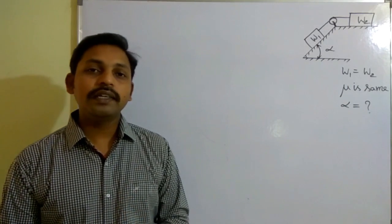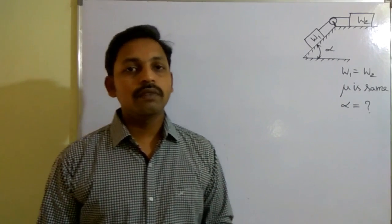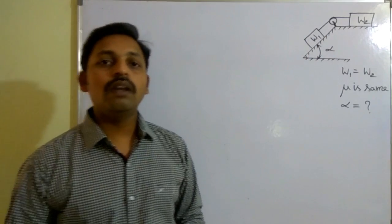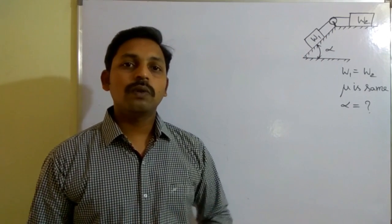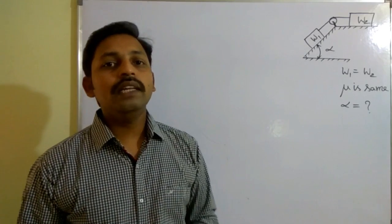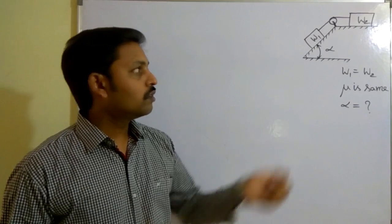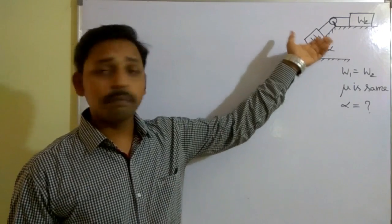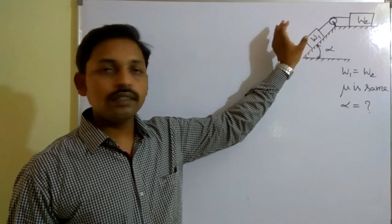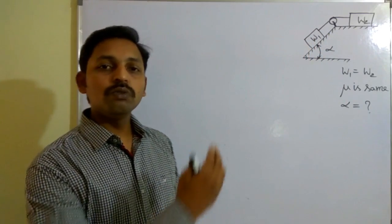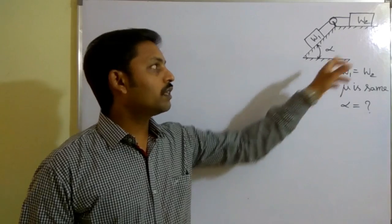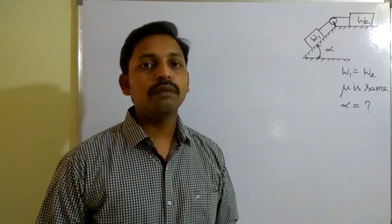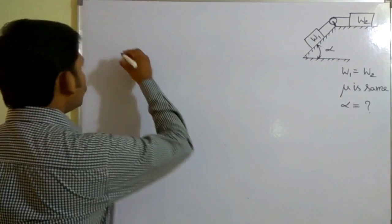Whatever may be the problem, the first thing you need to do is draw the free body diagram, apply equations of equilibrium, and solve. If you observe these two blocks — they are equal in magnitude. Suppose two persons are there: one person is sitting on the inclined plane and one on the horizontal plane, both equal in weight. The person on the inclined plane will have the tendency to move first, so W1 will have the tendency to move down first, and W2 is going to move in the left-hand side direction.